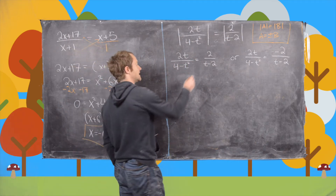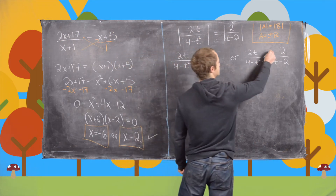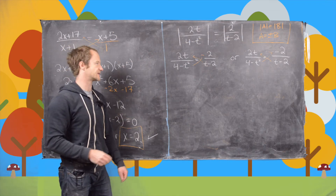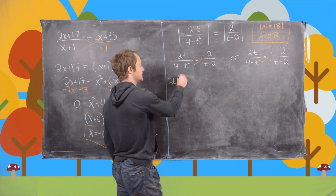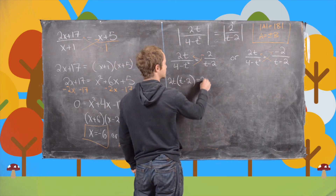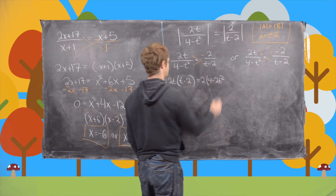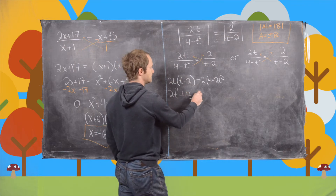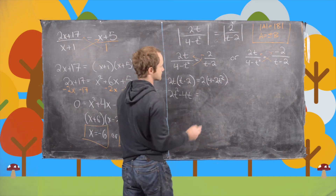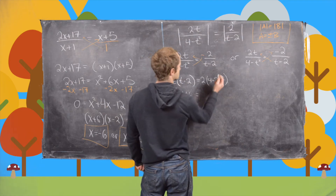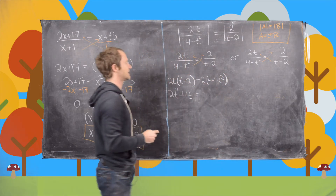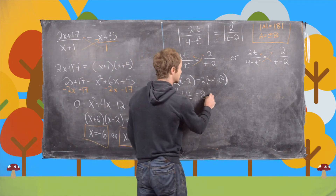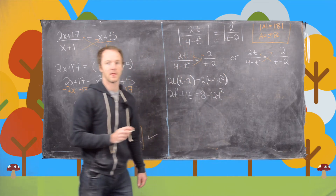We'll use cross multiplication again. Working on the left-hand equation first: cross multiplying gives us 2t(t − 2) = 2(4 − t²). Distributing the left side gives 2t² − 4t, and the right side gives 8 − 2t².